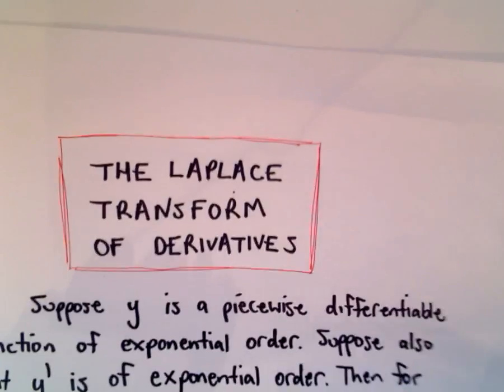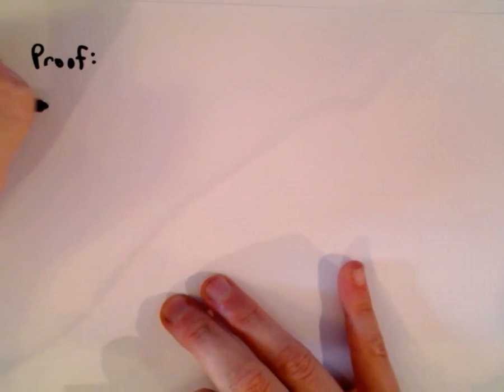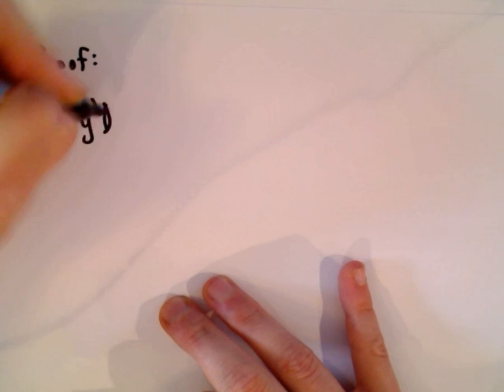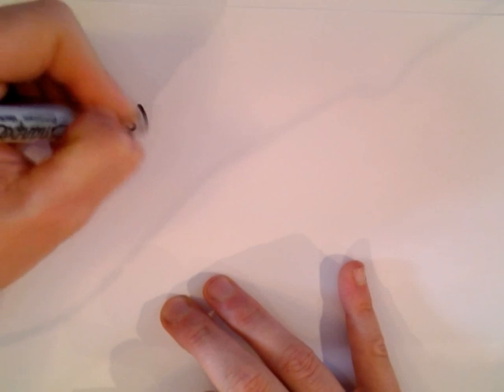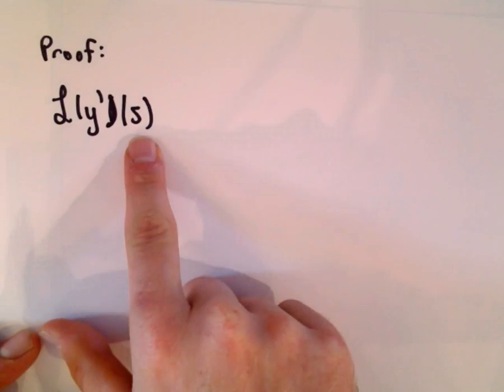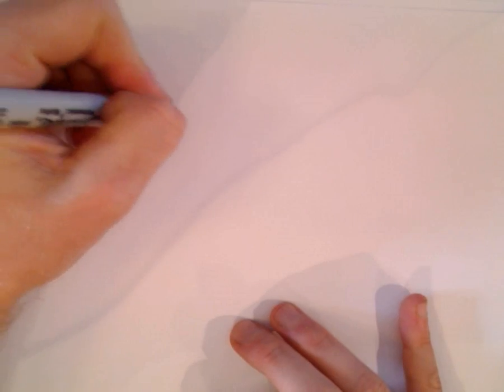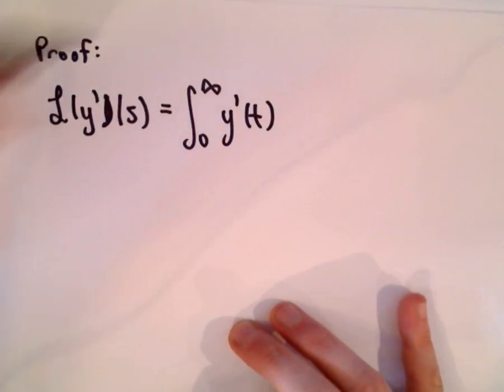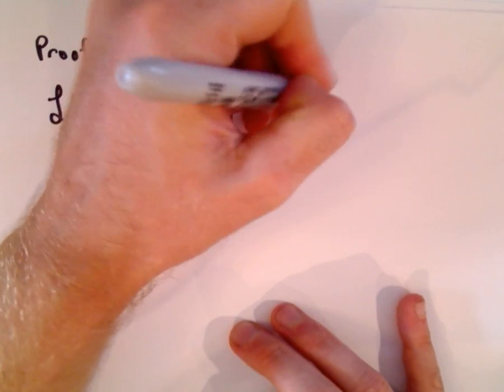Let's prove this since it's so important. It'll take a couple of minutes, but all we're really using is integration by parts. If you just want to see the mechanics you could skip this proof, but it's insightful as to what's going on. By definition, the Laplace transform of y' is just the integral from 0 to infinity of y'(t) · e^(-st) dt.